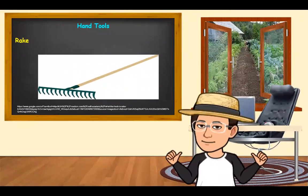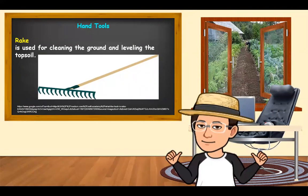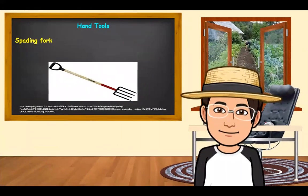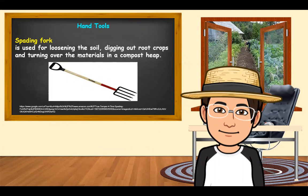The next one is what we call the rake. A rake is used for cleaning the ground and leveling the soil. Next is the spading fork, which is a hand tool used for loosening the soil, digging out root crops, and turning over the materials in a compost heap.